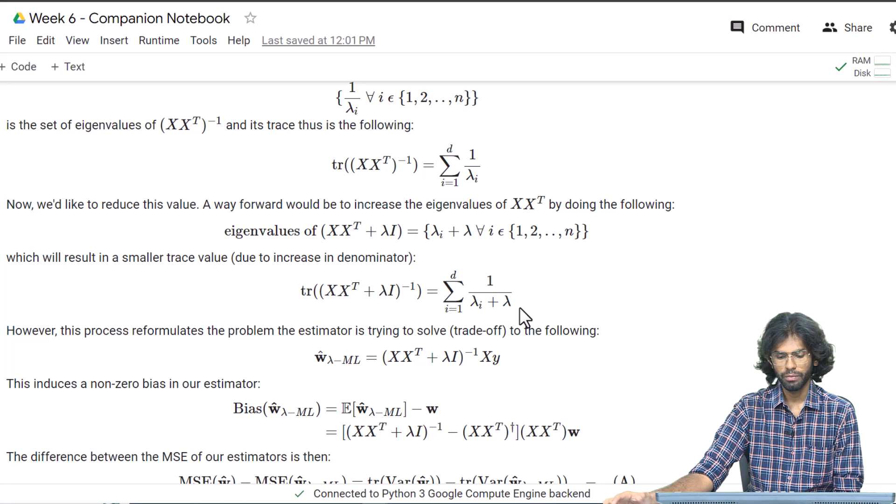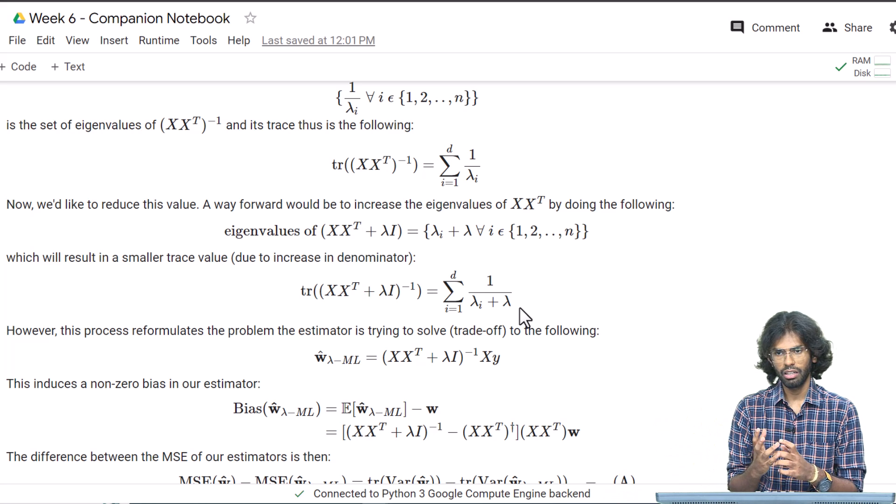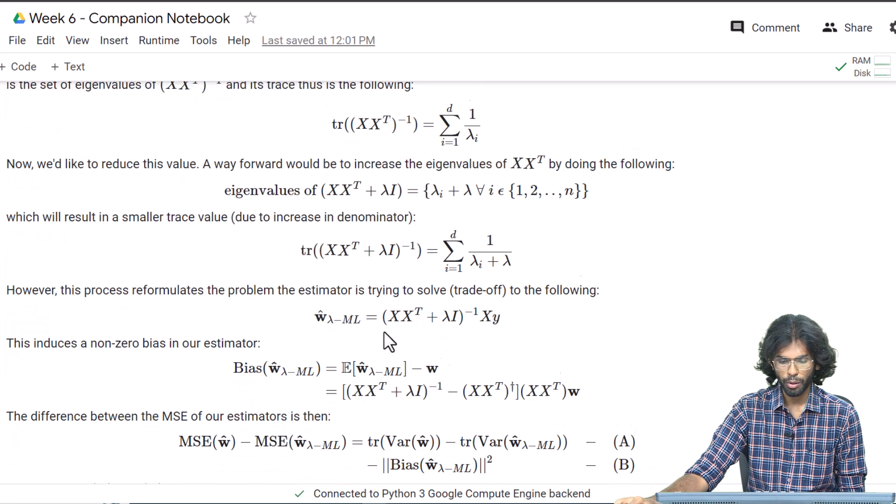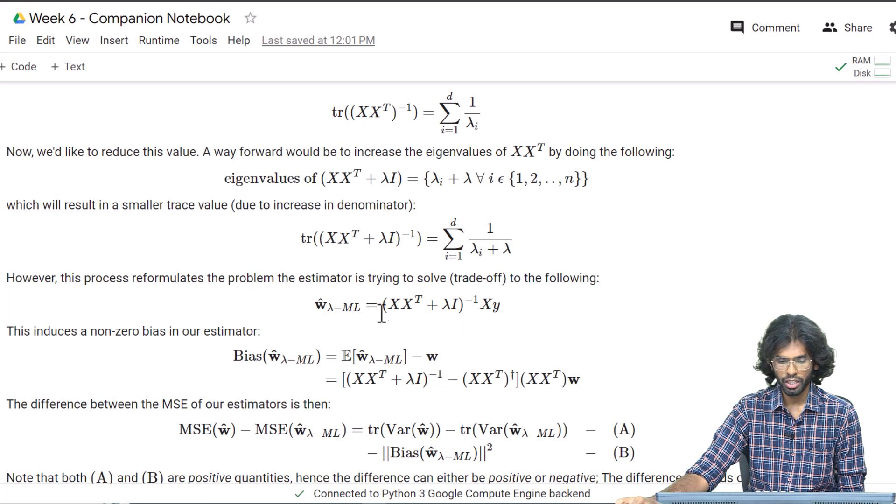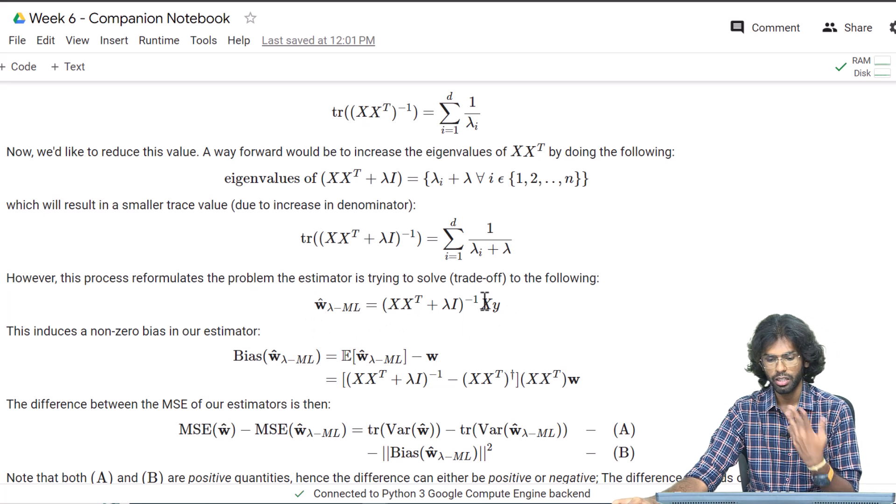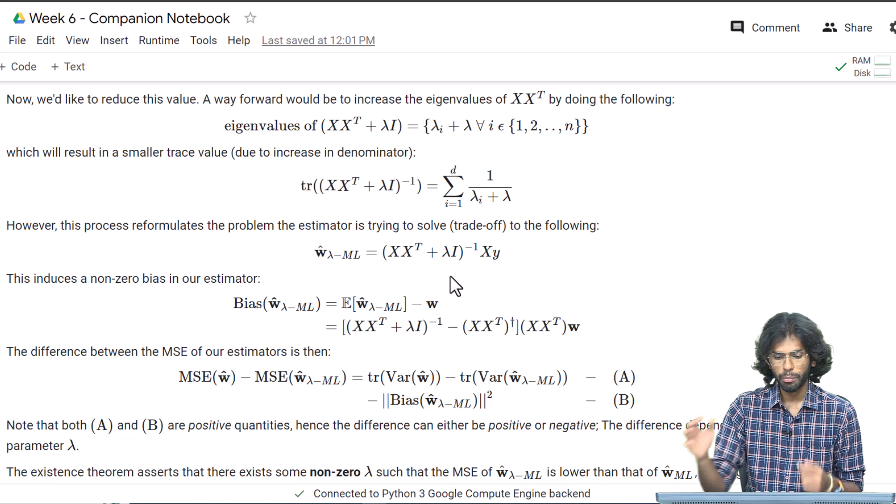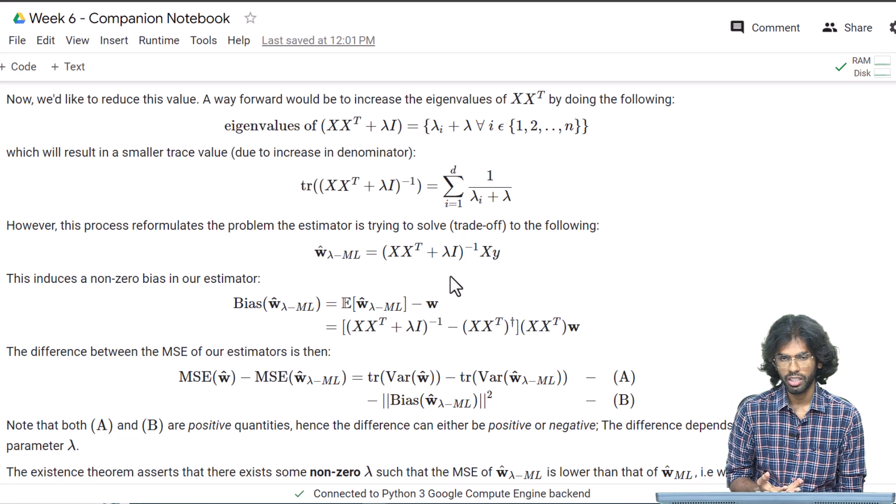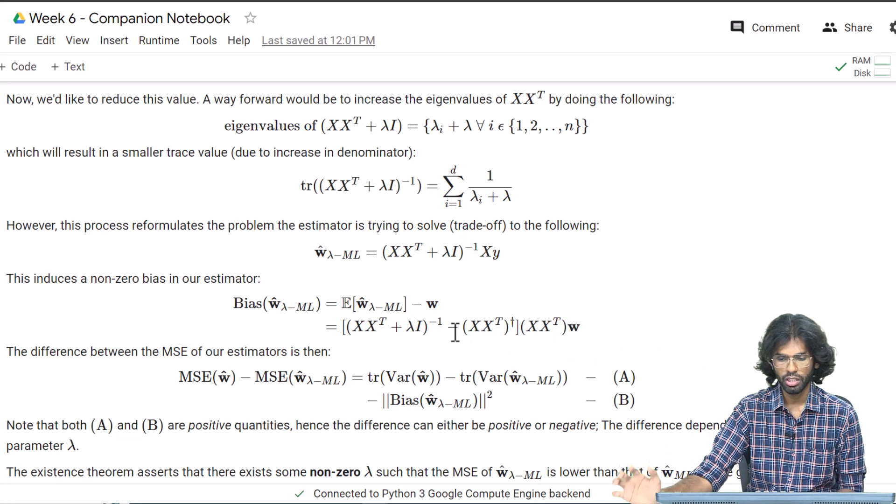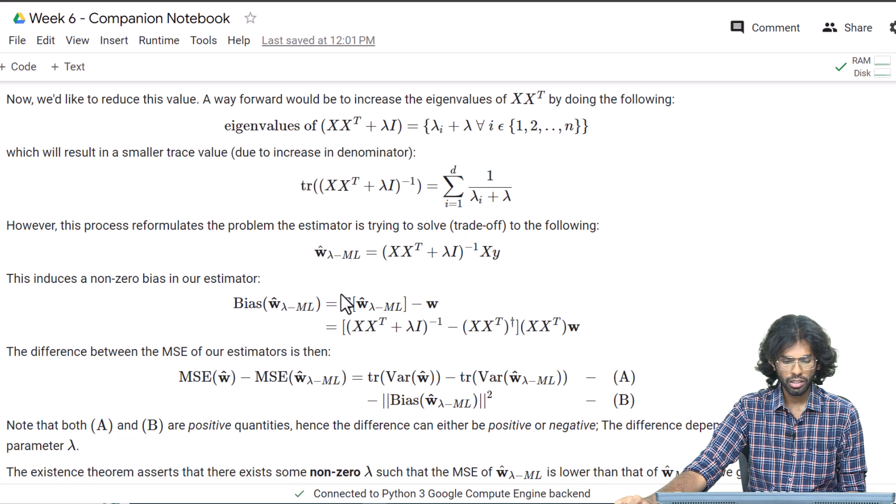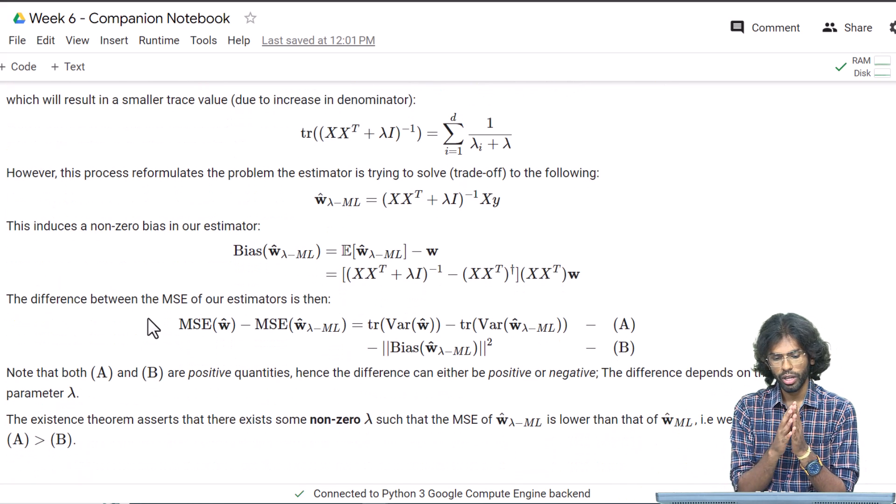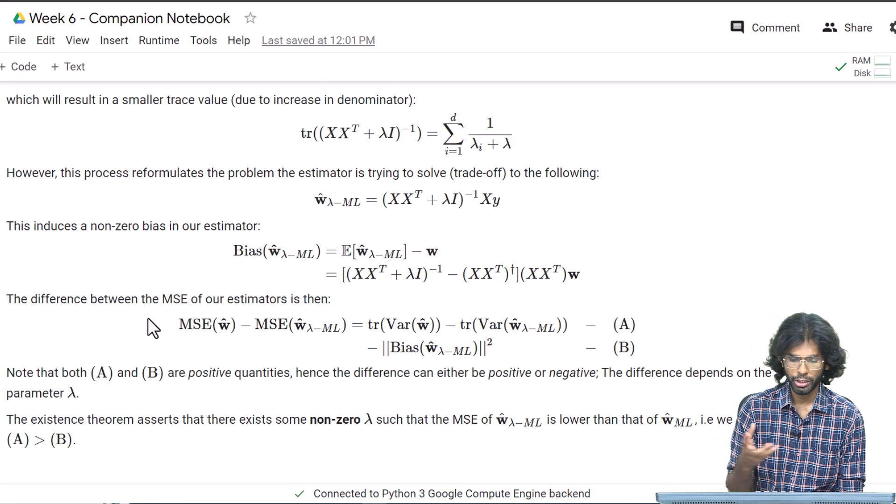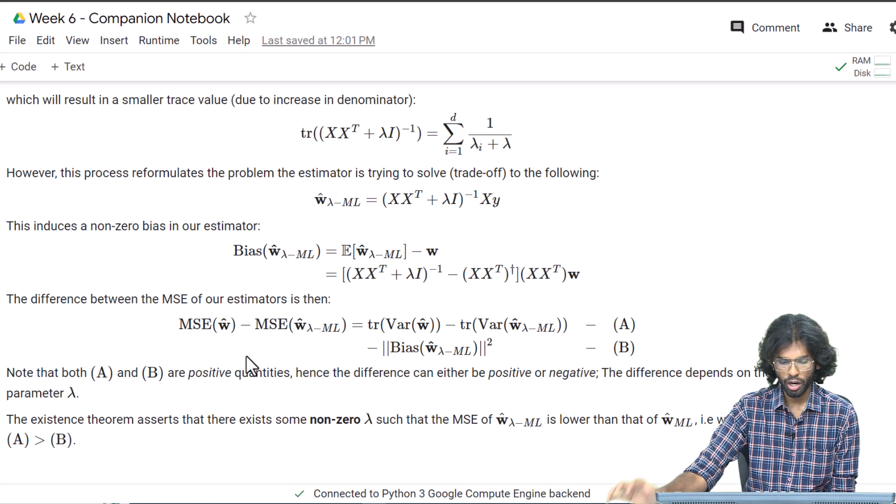However, this changes the problem that we are trying to solve initially. The problem becomes (XX^T + λI)^-1 XY—not XX^T inverse XY, but with this extra λI term. Because the problem has shifted from what we initially wanted to solve, we are inducing a non-zero bias in our estimator. This is a non-zero bias. Now, we are in pursuit of an estimator with a lower mean squared error. If we see what difference this makes, we get the following.